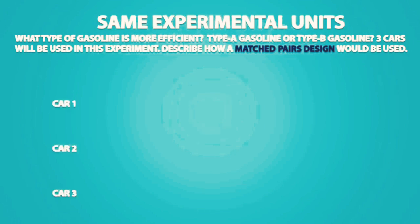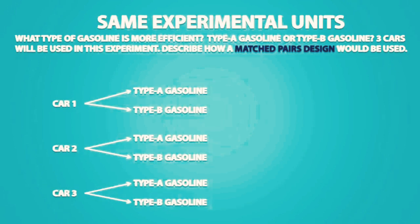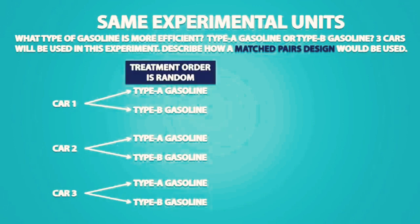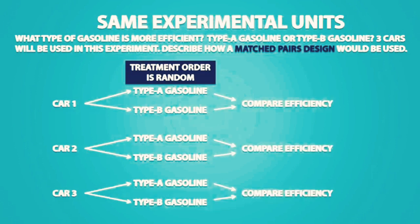We have three cars, and each car will receive both treatments — one with type A gasoline and one with type B gasoline. We use the same car for each treatment, and which treatment goes first is random. For example, we could drive with type B gasoline first, then once all the gasoline is finished, fill up the car with type A gasoline using the same quantity. At the end of the experiment, we would compare the efficiency of the gasoline.